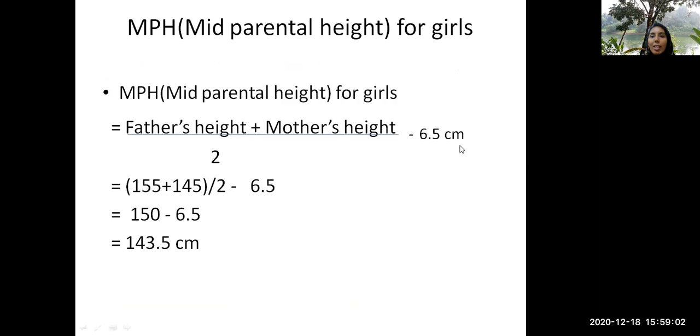So first we need to calculate the mid-parental height. This is the mid-parental height formula for girls. So for girls, the mid-parental height formula is father's height plus mother's height minus 6.5 centimeters divided by 2.